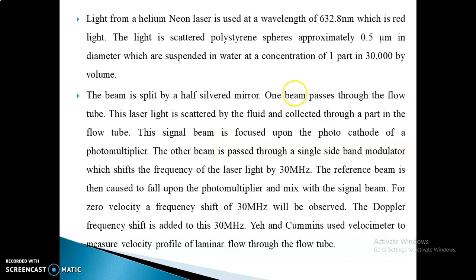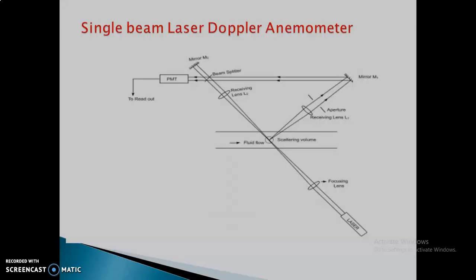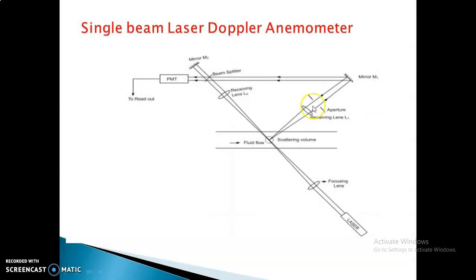The scattered light is collected and focused on the cathode of the PMT tube. There is a modulator for shifting the frequency. The reference beam falls upon the photomultiplier and mixes with the signal beam. The zero-velocity frequency shift is about 30 MHz, and the Doppler frequency shift is also added. Whatever signals come out will be received via the detector module.